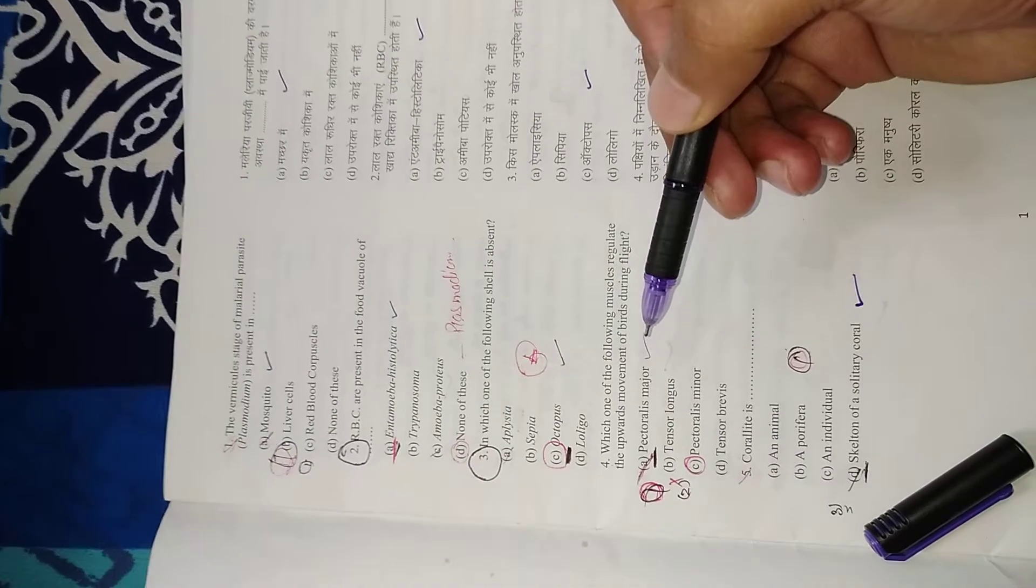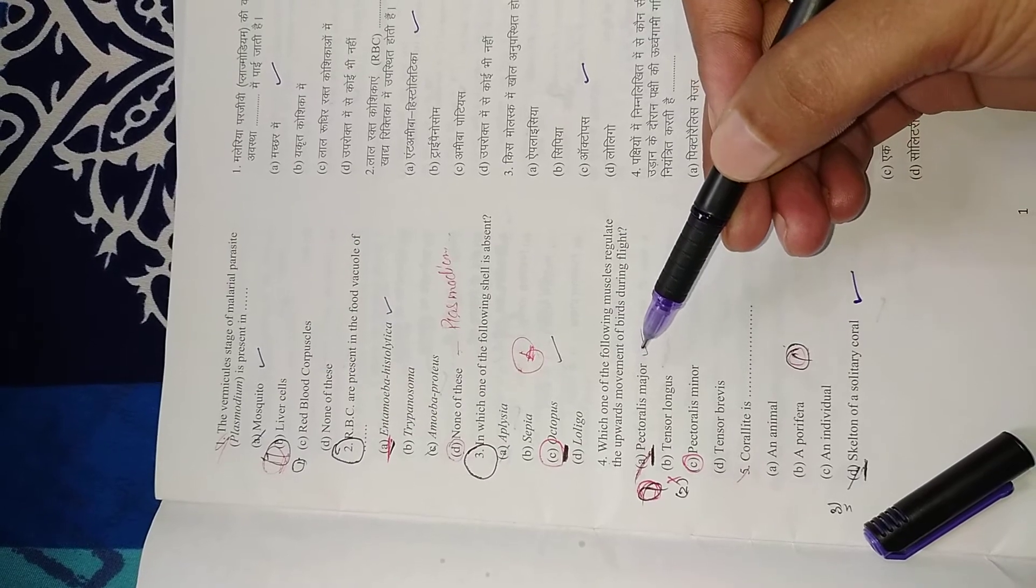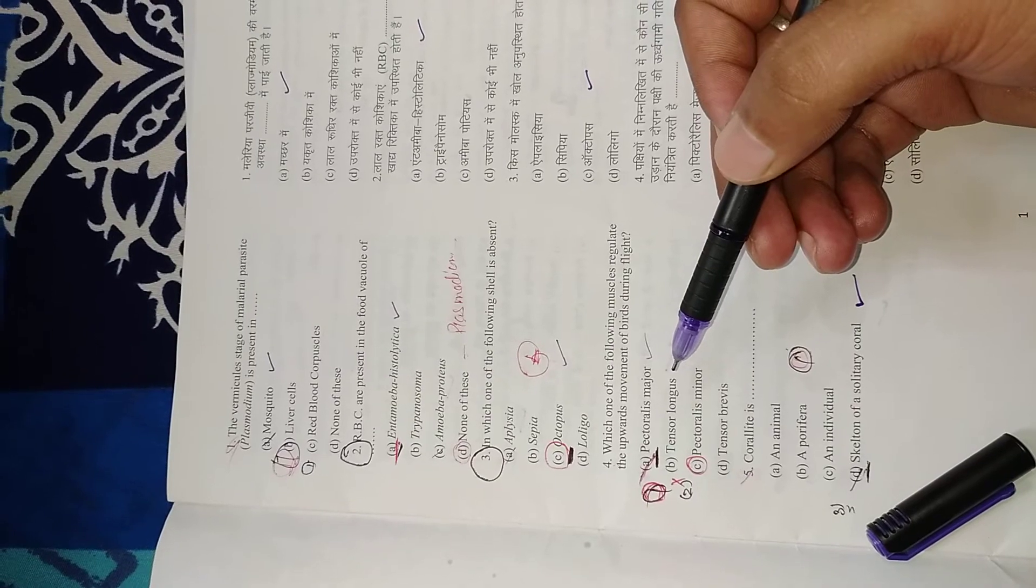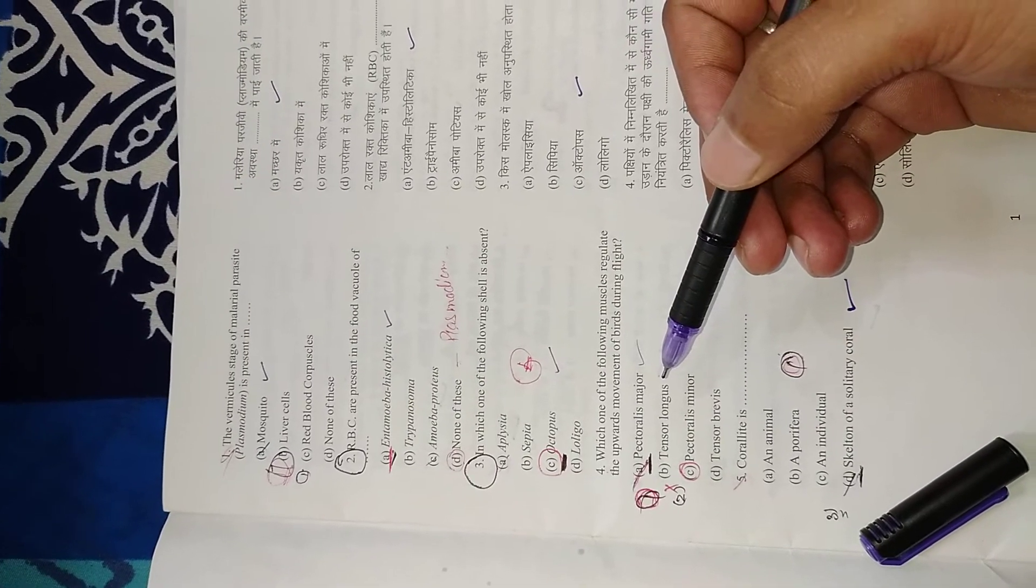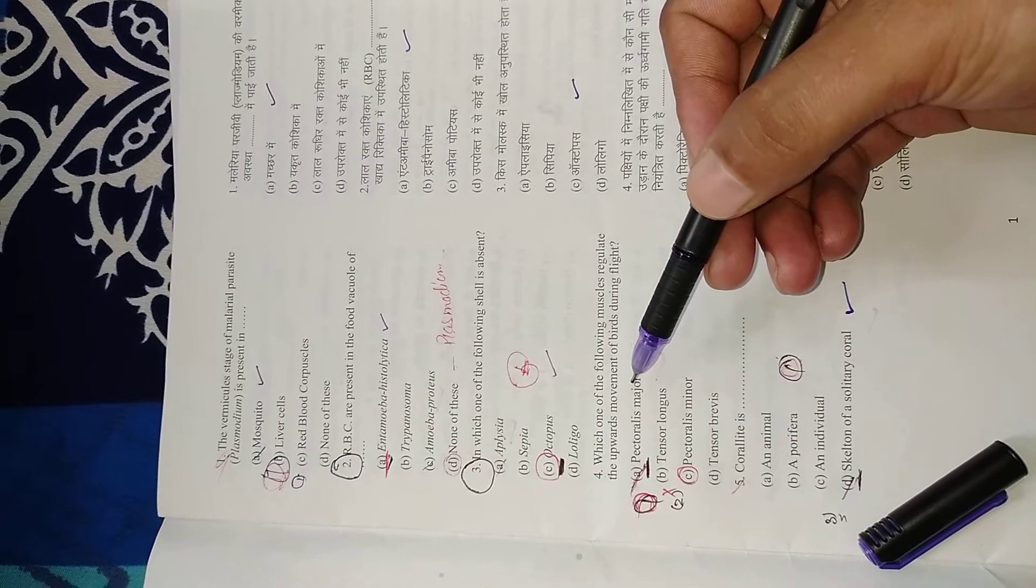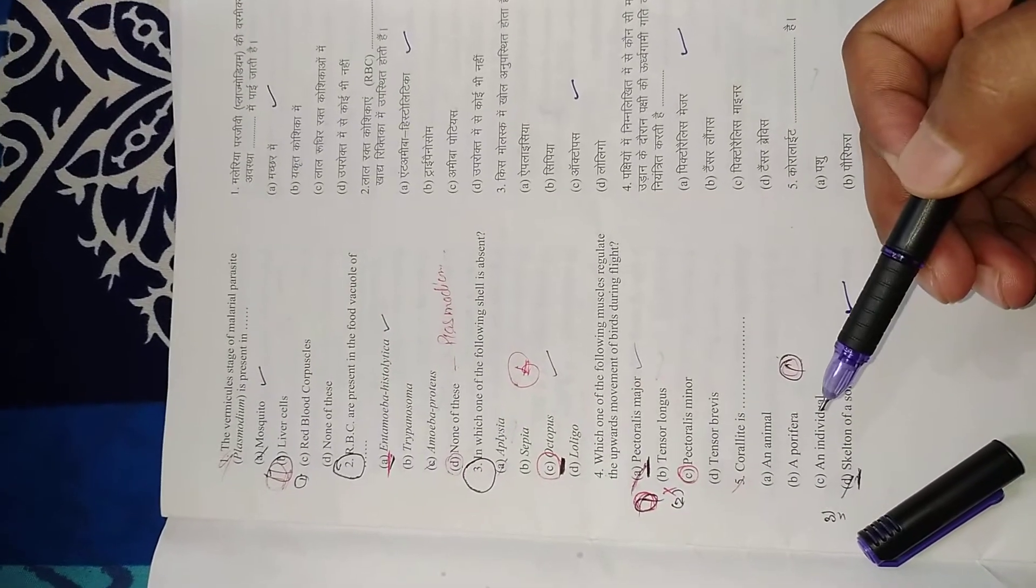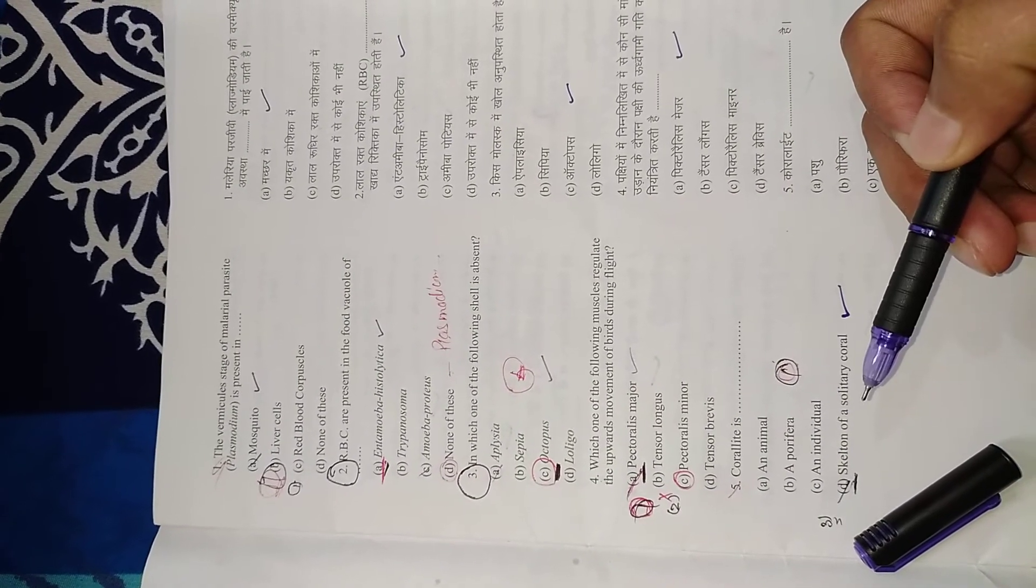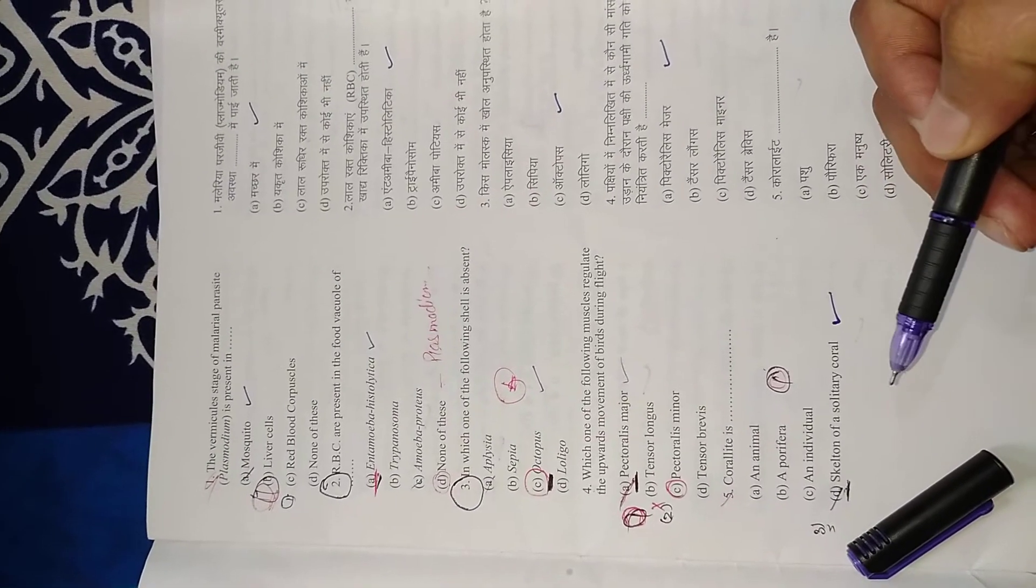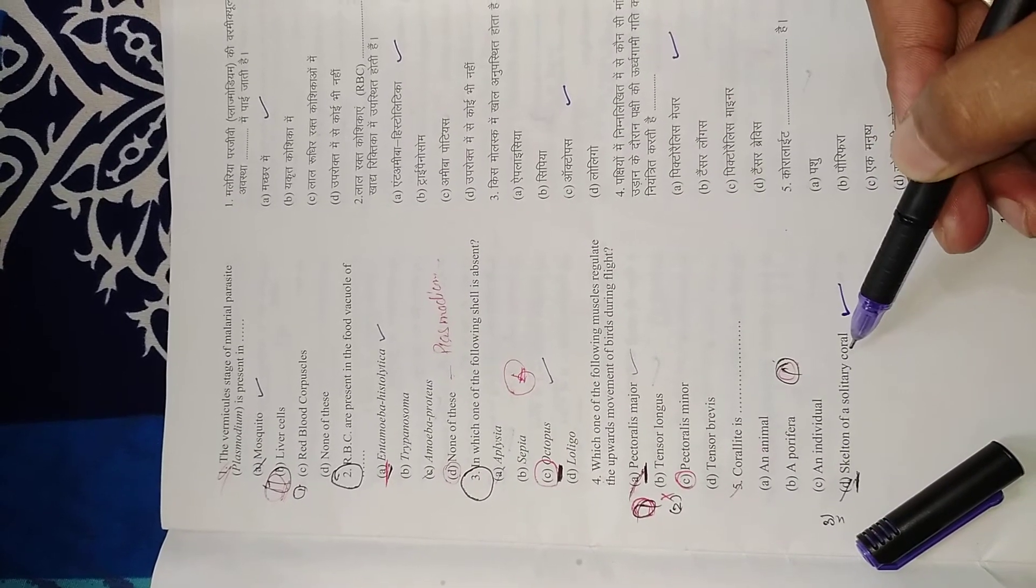Question 4: Which muscle regulates the upward movement of birds during flight? Right option is A, pectoralis major. It helps in depressing the wing, causing upward thrust. Question 5: Corallite is the skeleton of solitary coral. The polyps form the corallite. Right option is D, skeleton of solitary coral.